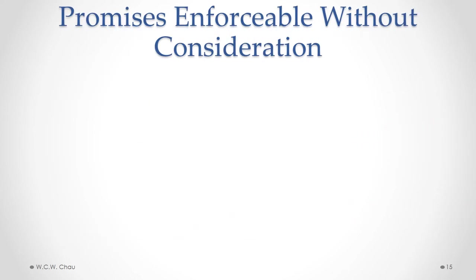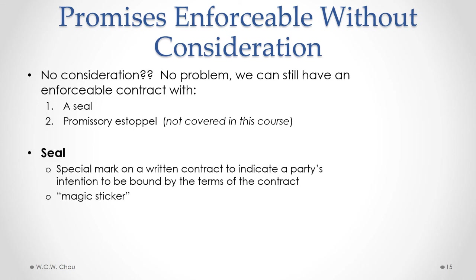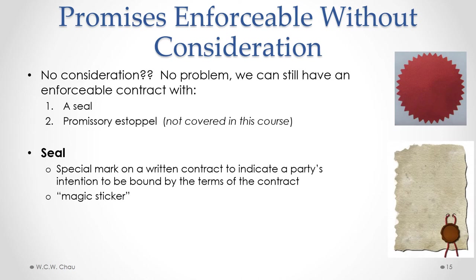A one-sided promise where one party is making a promise and the other is giving nothing in exchange lacks an exchange of consideration and is therefore not an enforceable contract. One-sided promises can be made into enforceable contracts in one of two ways even without an exchange of consideration: the first way is by using a seal, and the second way is under the legal doctrine of promissory estoppel — which is not covered in this course. A seal is a special mark on a written contract to indicate a party's intention to be bound by the terms of the contract. The person making the one-sided promise puts it in writing, signs it, and puts a special red sticker on it — what I call a magic sticker. The effect of that magic sticker is to make that one-sided promise into a legally binding contract.